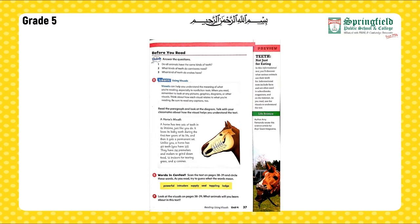Exercise D: Learn using visuals. Visuals can help you understand the meaning of what you're reading, especially in nonfiction texts. When you read, remember to look at any pictures, graphics, diagrams, or other visuals. Visuals are basically the pictures, graphics, diagrams, etc. that accompany your text to help you understand it better. Think about how each visual relates to what you're reading. Be sure to read any captions too.